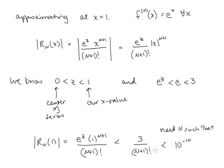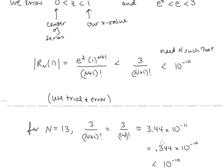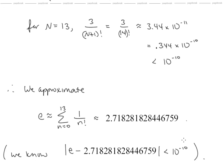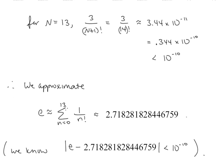We need to find the n that gives us the inequality: |r sub n of 1| is less than 3 over (n+1) factorial, which we need to be less than 10 to the negative 10. Using trial and error, we find that for N equals 13, 3 over 14 factorial is approximately 0.344 times 10 to the negative 10, which is less than 10 to the negative 10. So the 13th degree Taylor polynomial gives us the desired accuracy.